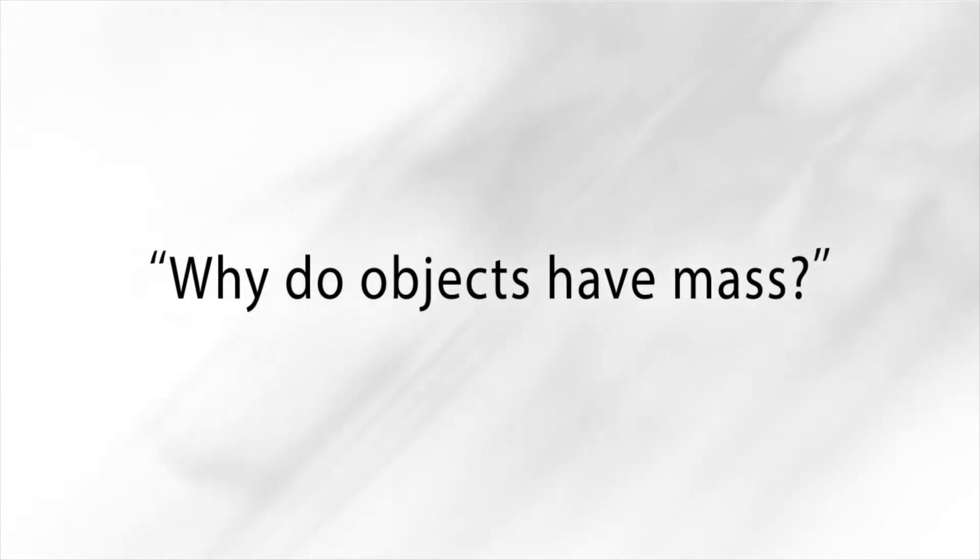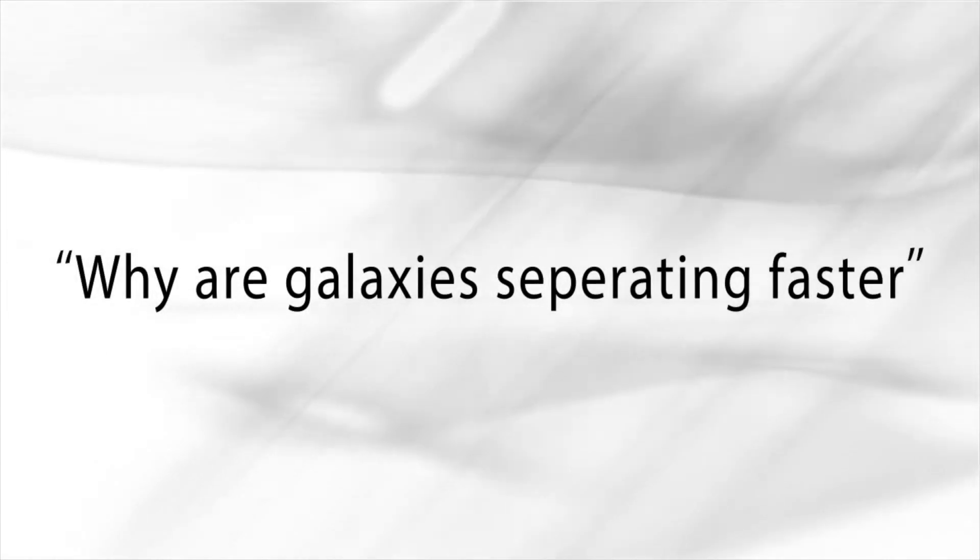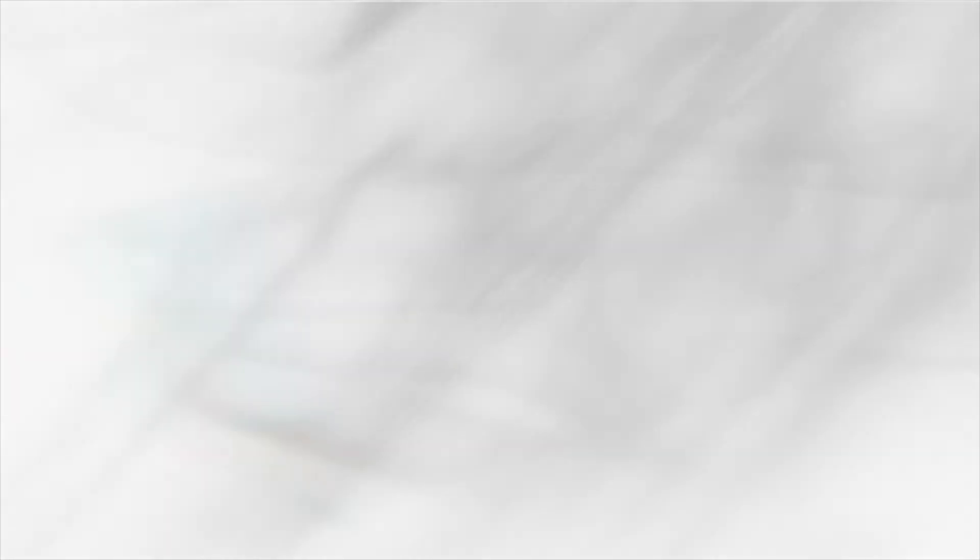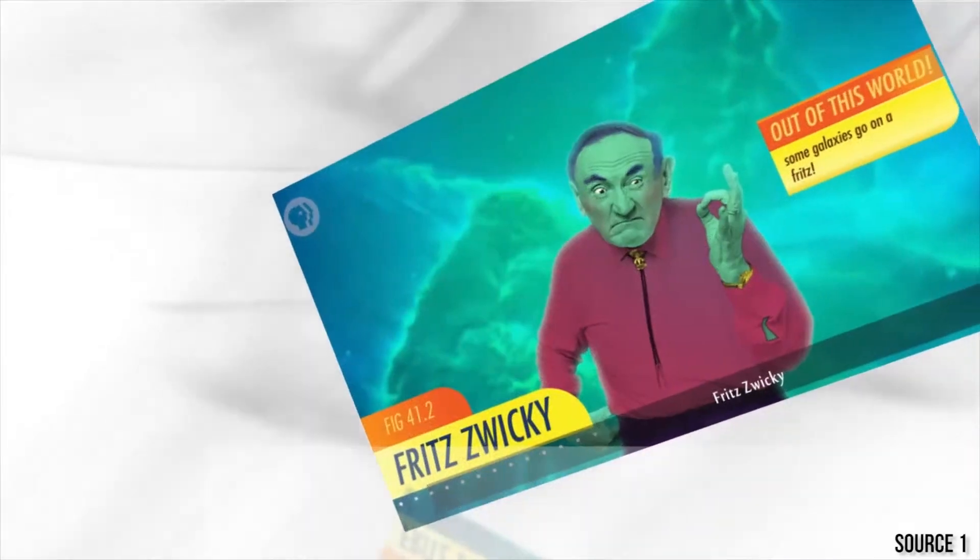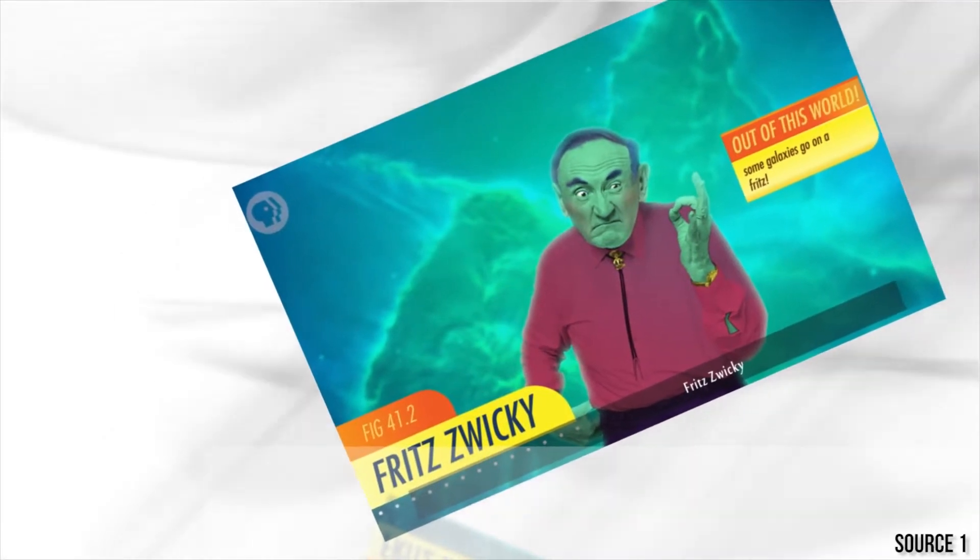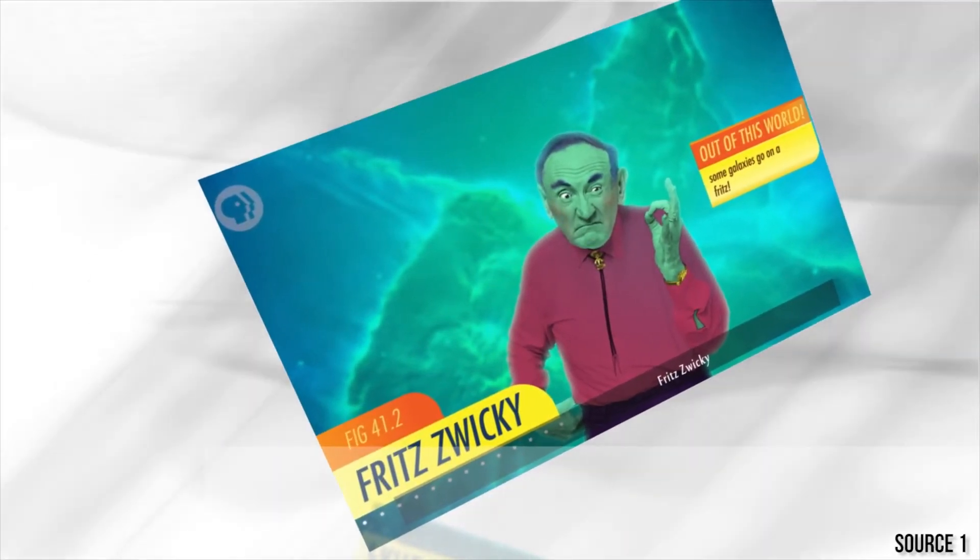Why do objects have mass? Why are some galaxies separating faster than other galaxies and other clusters? Astronomer Fritz Zwicky speculated of a mysterious force contributing to the source of why some objects inconsistently behave with their mass.